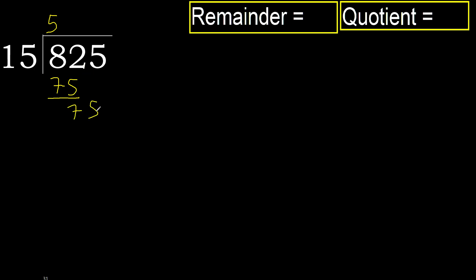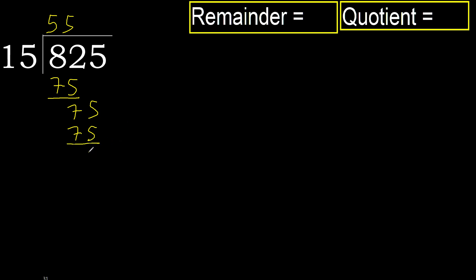75 multiplied by 5 is 75, ok, is not greater. Subtract: 0. Next — that is not a number, therefore finish.